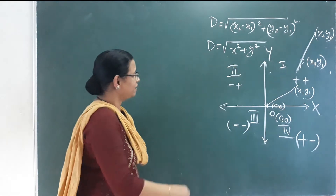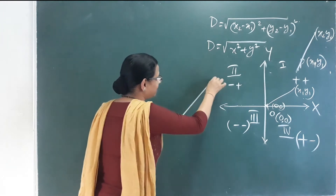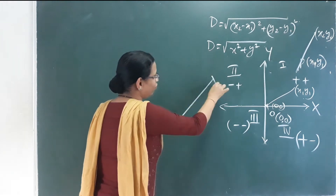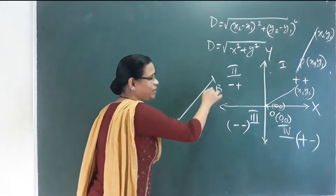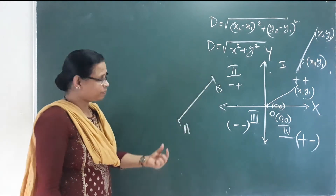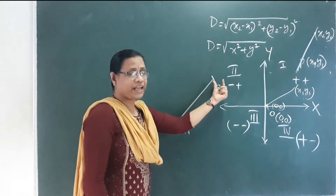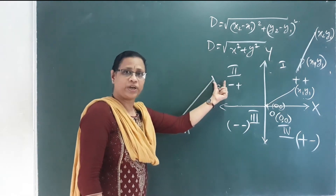We have two formulas. Now we have a line with points A and B in this plane. A is at (x1, y1) and B is at (x2, y2). These are the two points.